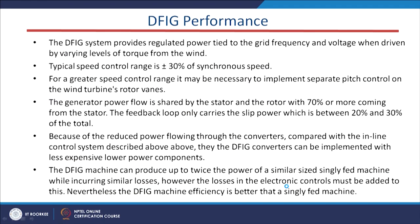The typical speed control range of the DFIG is 30 percent of the synchronous speed. For a greater speed control range it may be necessary to implement separate pitch control and turbine rotor vents.